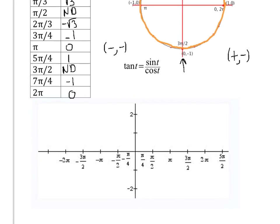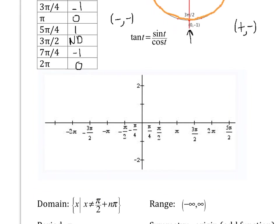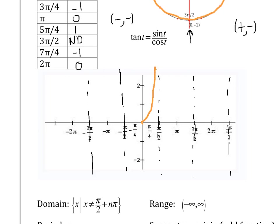Let's graph the tangent function. The vertical asymptotes are at pi over two and three pi over two — all odd multiples of pi over two, which we can write as pi over two plus n pi, where n is any integer. At t equals zero you start and the tangent of zero is zero. In the first quadrant the tangent gets bigger; the tangent of pi over four is one. As you get close to pi over two, the tangent goes to positive infinity.